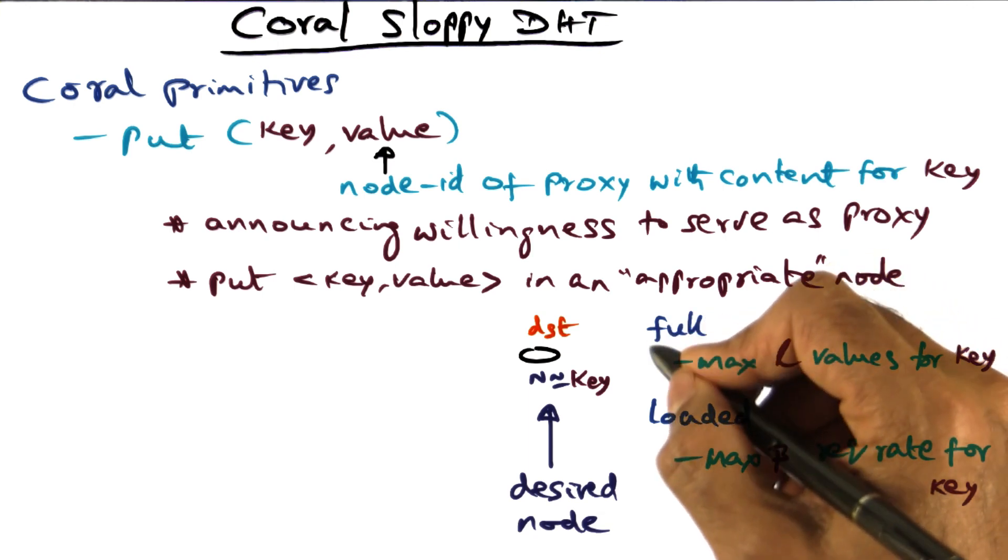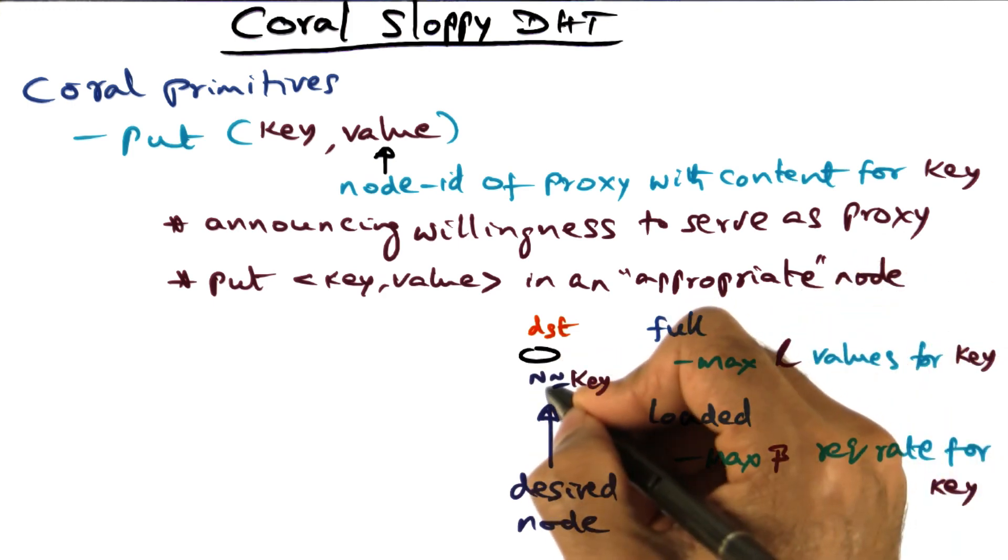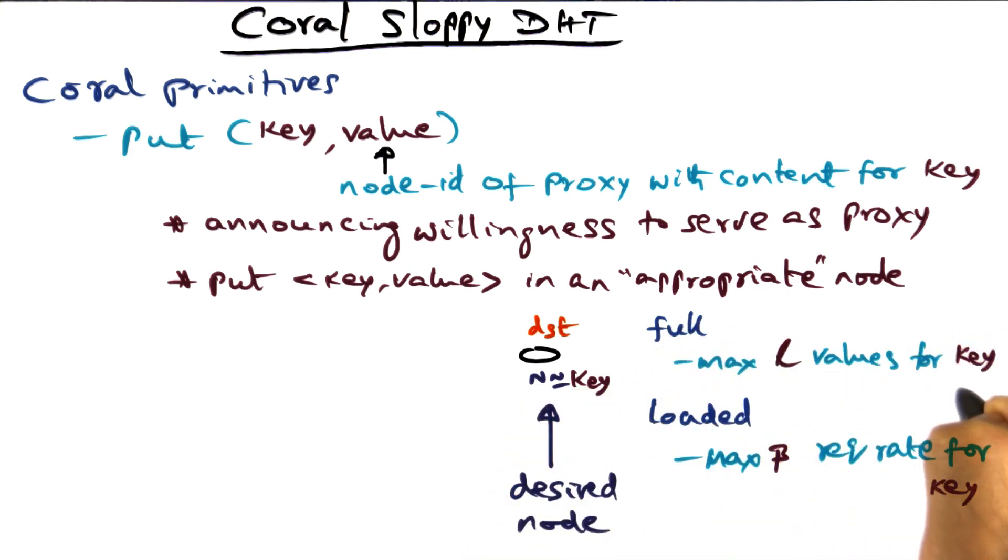One state is called a full state. And what that is saying is a particular node, let's say node n, is already storing L values for a key. Remember what I said earlier.